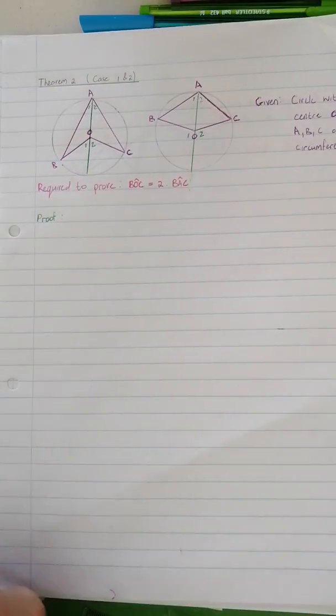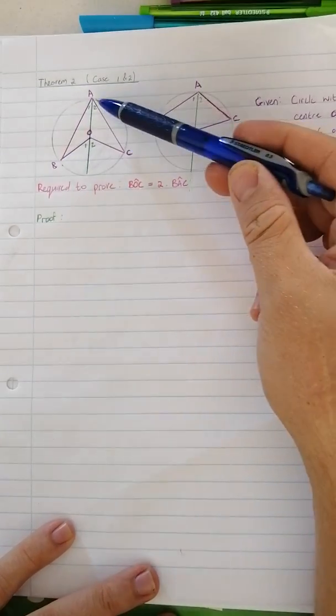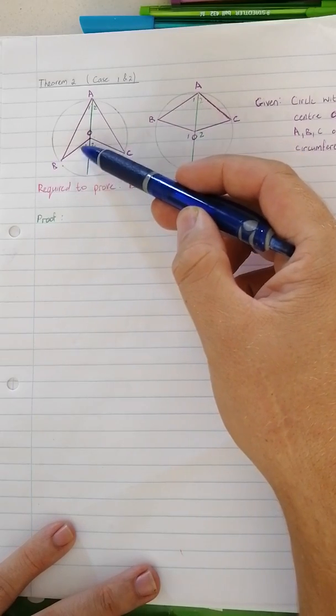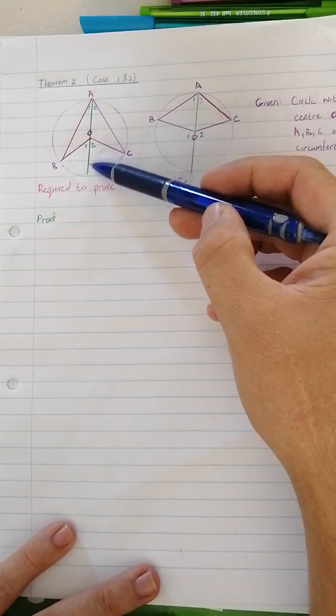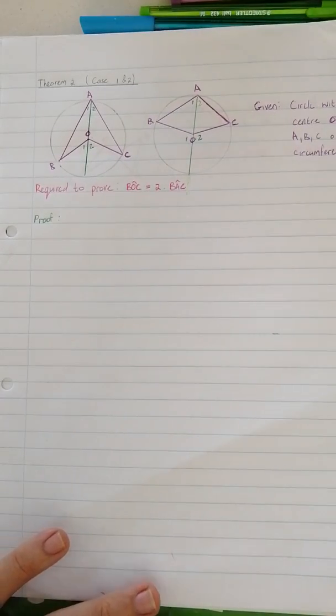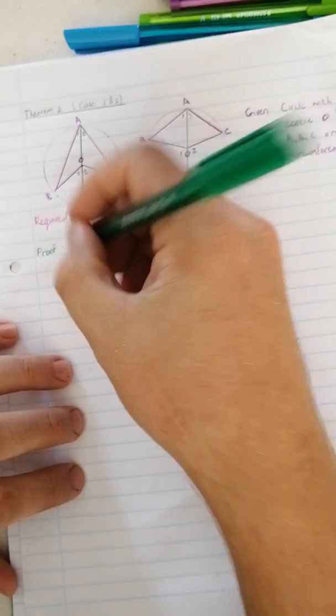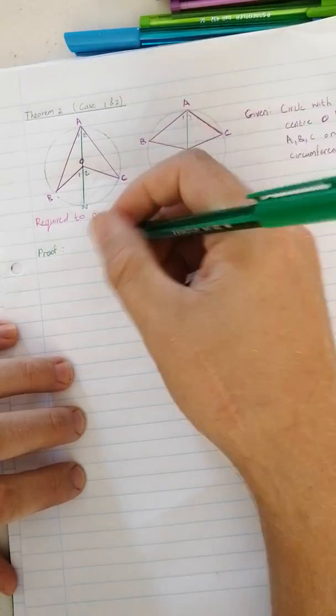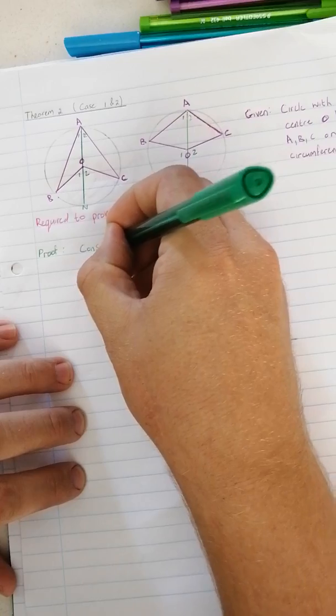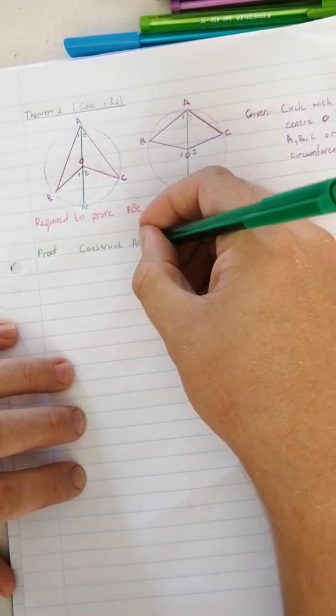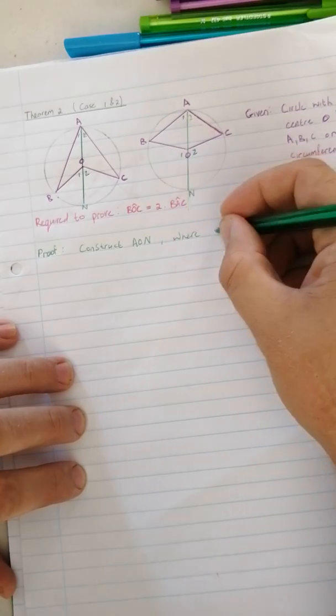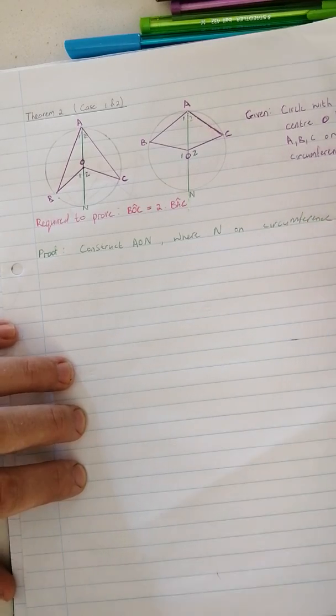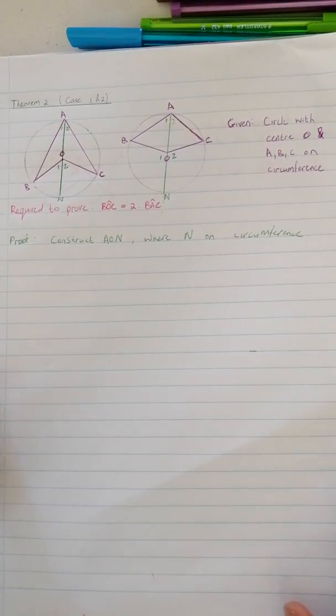Can you see that we've got two different triangles? We've got triangle ABO and we've got triangle AOC. And immediately I can see that this line is extended and creates an exterior angle, and this line is also extended and creates an exterior angle. So immediately exterior angle jumps to mind. But let's just start. Construct AO where N is on the circumference. So that's what I've done so far.